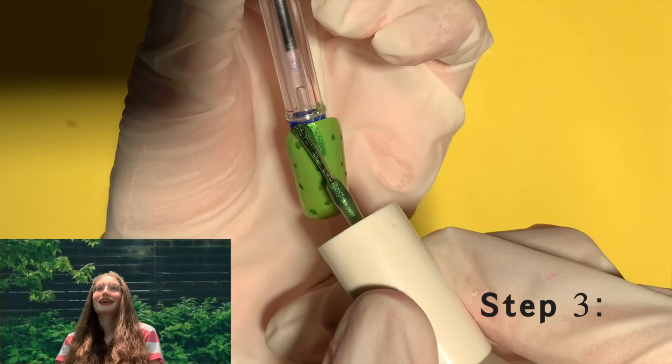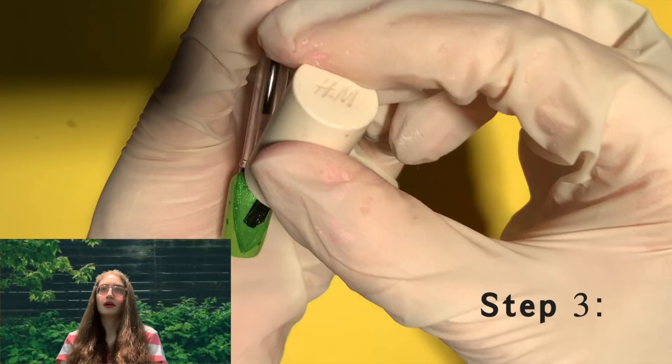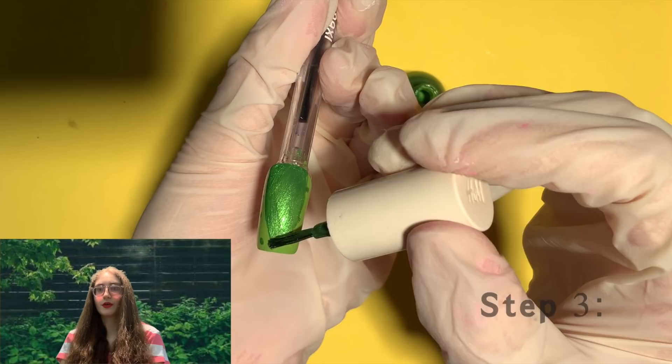Step three, using the same color with the nail polish brush that comes in the bottle, draw a huge leaf shape. It doesn't have to be perfect, so don't spend too much time on this part because it's going to be mostly covered up. You can use a thinner brush if it's easier for you.